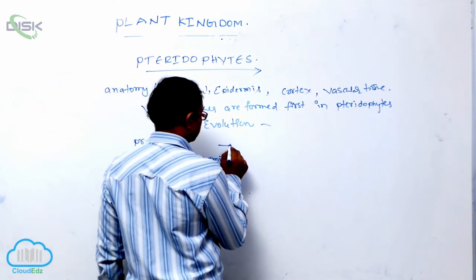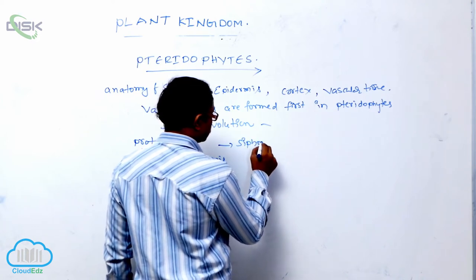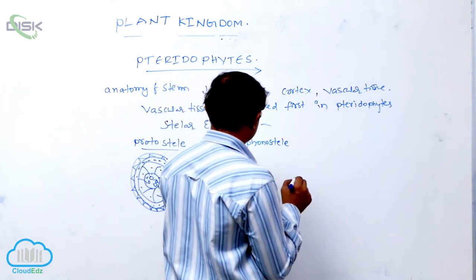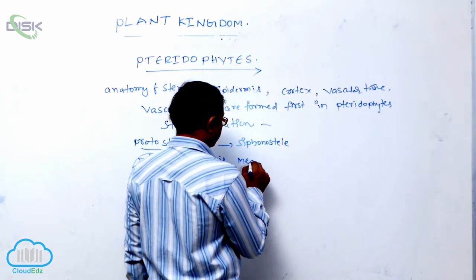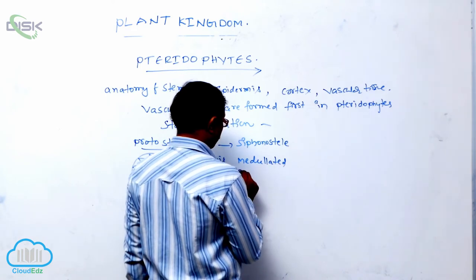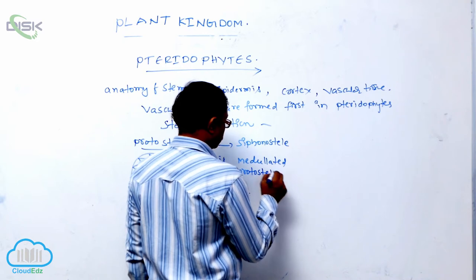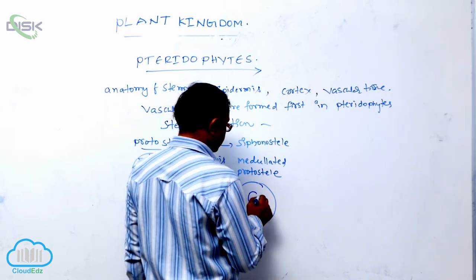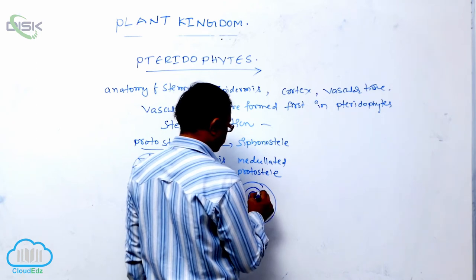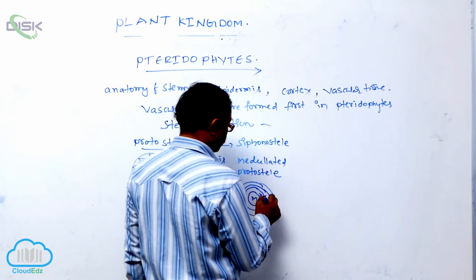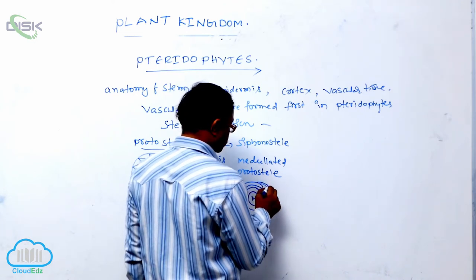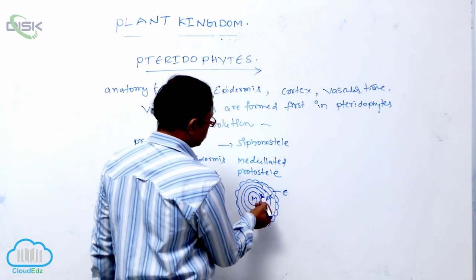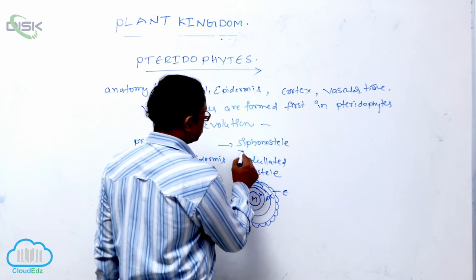After the protostele comes the siphonostele. Siphonostele means a medullated protostele is known as the siphonostele. It means, for example, in a protostele, there is a medulla at the center, then xylem, then phloem, then cortex, surrounded by the epidermis. So: epidermis, cortex, phloem, xylem, and medulla — a medullated protostele is known as the siphonostele.